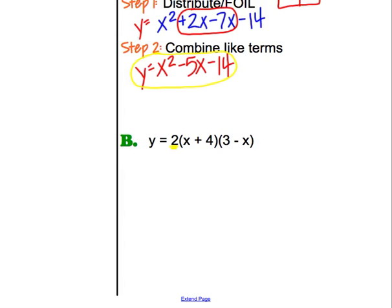All right, I am going to start off by first, as I said, distribute or FOIL. I'm going to distribute that 2 in first so we can take care of it. So then that means I'm going to have y equals 2x plus 8 times the quantity 3 minus x.